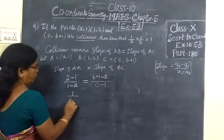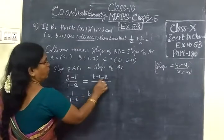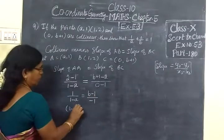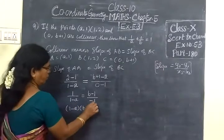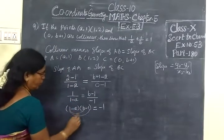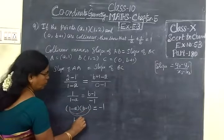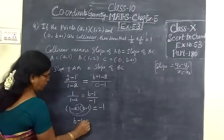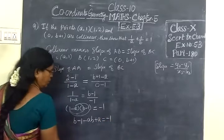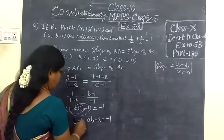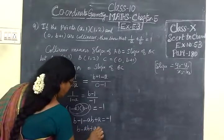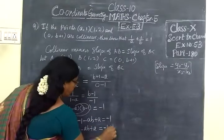So 2 minus 1, 1, by 1 minus A, equal to B+1 minus 2 by 0 minus 1. Now cross multiply: 1 minus A times B minus 1. This gives B minus AB minus 1 plus A equal to minus 1. So B minus AB plus A equal to minus 1.